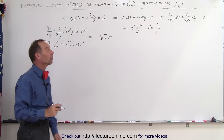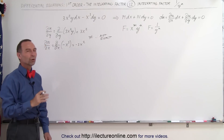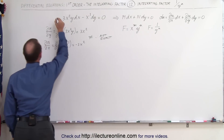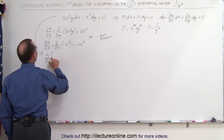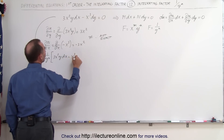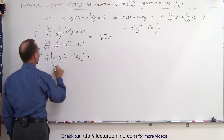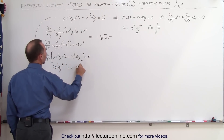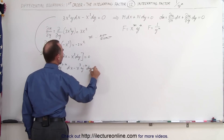So we need the integrating factor, and let's assume it takes the form 1 over y to the n. We multiply both sides of the equation by 1 over y to the n, and all we have to do is find what the exponent n equals. Multiplying through, we get 3x² y to the (1 minus n) dx minus x³ y to the minus n dy equals 0.